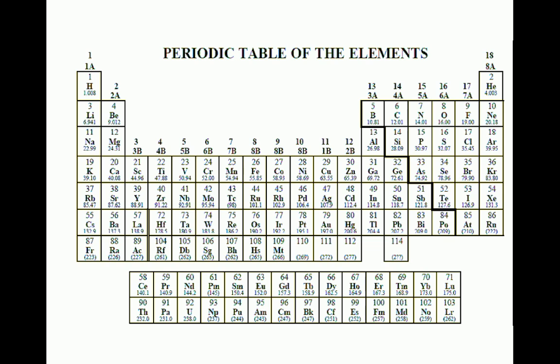This is because each distinct block of the table represents a different subshell of the energy level. For example, the leftmost subsection of the periodic table that contains the first two columns represents the S subshell.